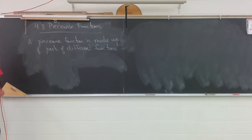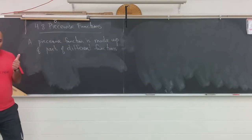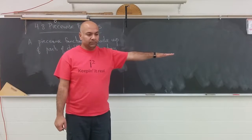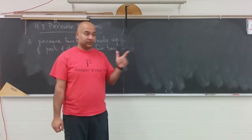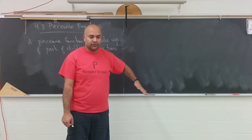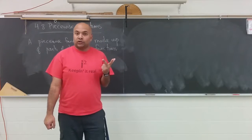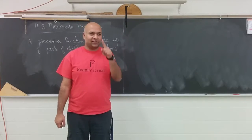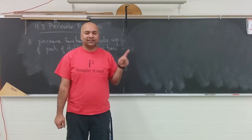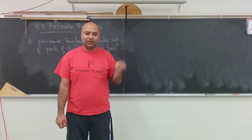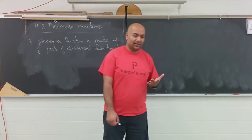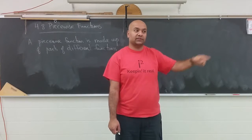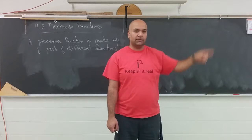We've learned constant functions - the flat horizontal line. We learned linear functions - the diagonal line going up or down. We then looked at quadratic, which was the parabola. Then we looked at exponential, which started out really slow and then all of a sudden snapped - it was kind of the zombie apocalypse type idea.